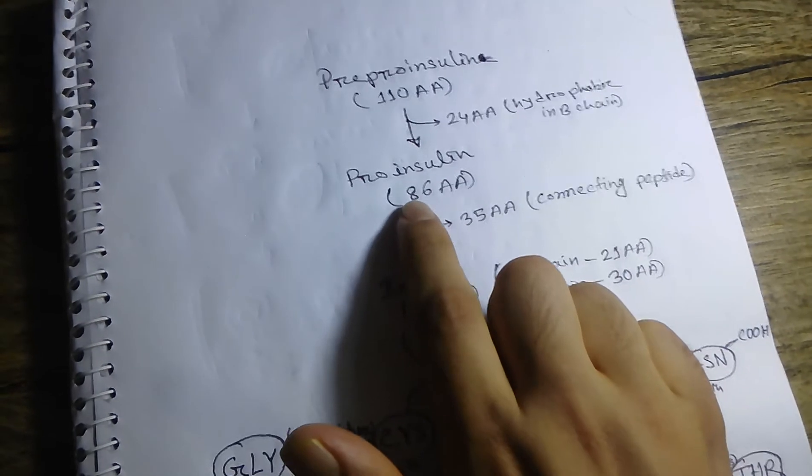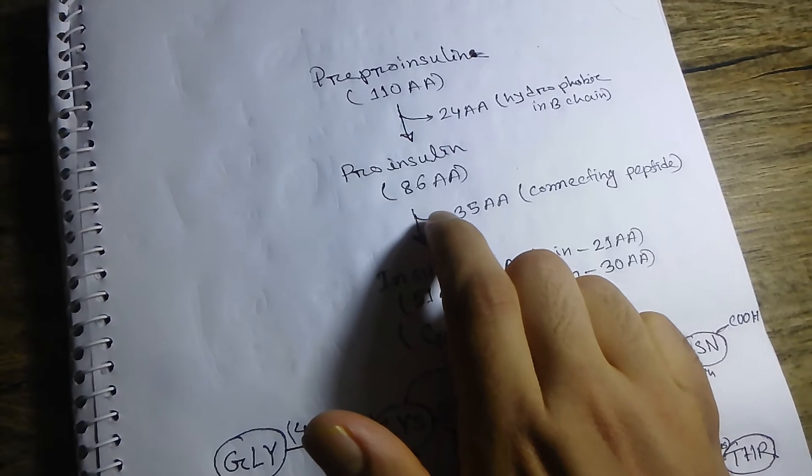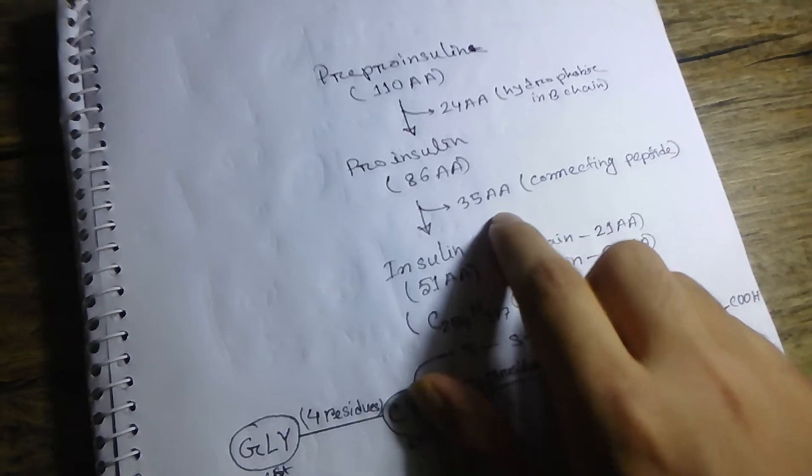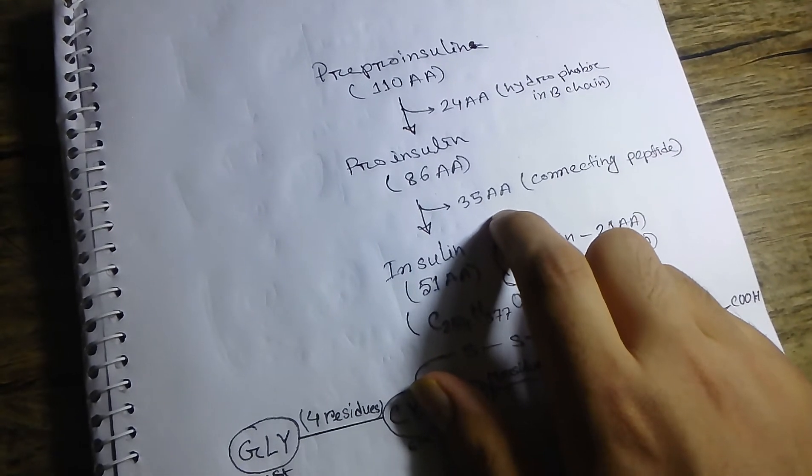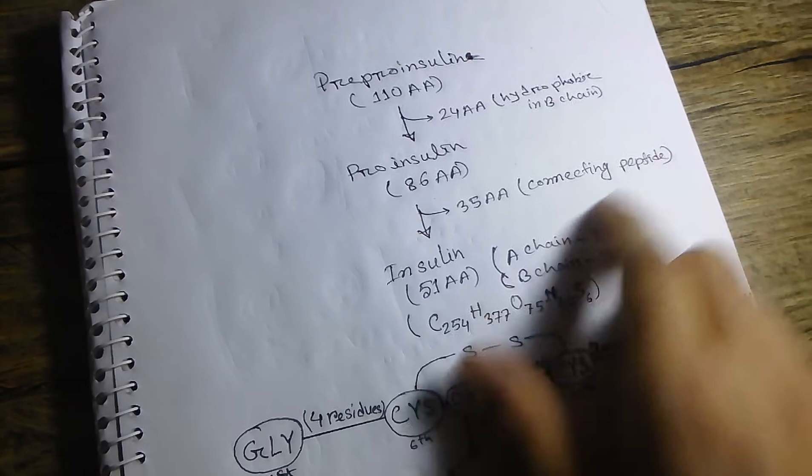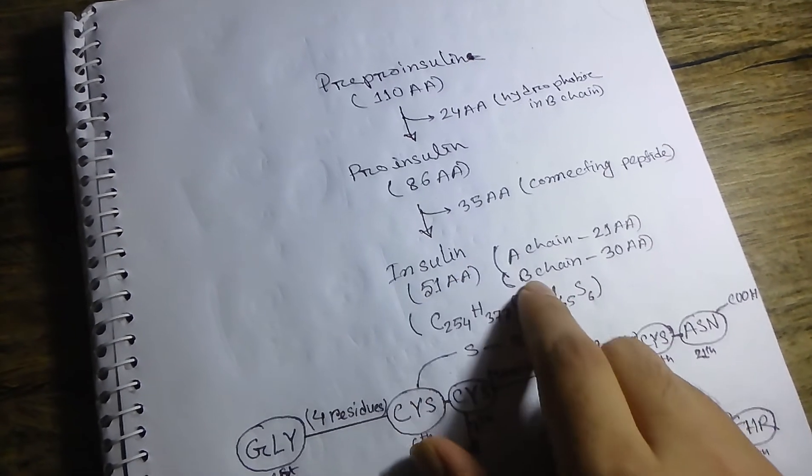These 86 amino acids include 35 amino acids called the connecting peptide, or C-peptide. This connecting peptide connects the insulin A chain and B chain.